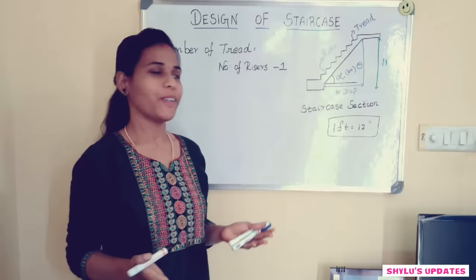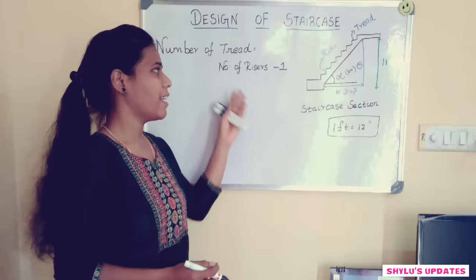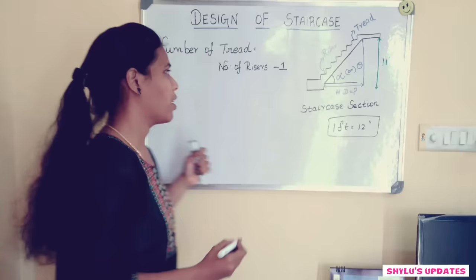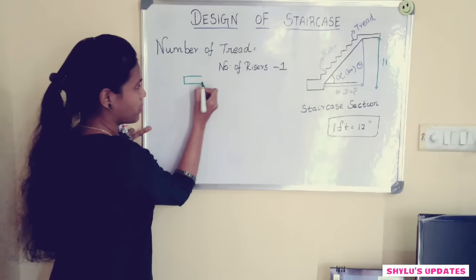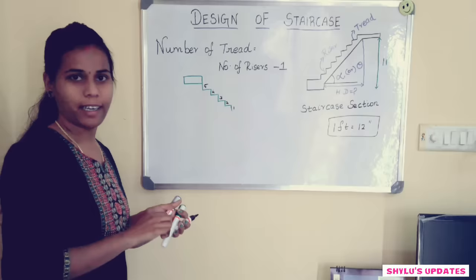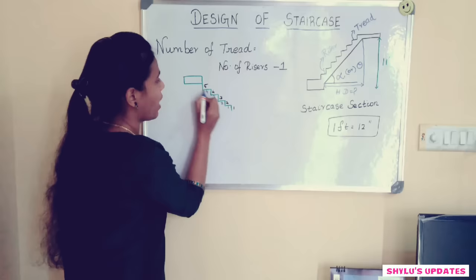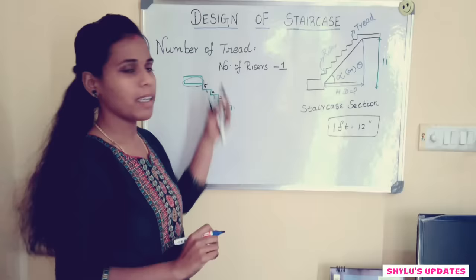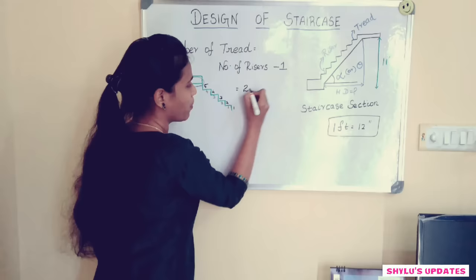In the next step, we are going to calculate the number of treads. The formula is: number of treads equals number of risers minus 1. You may wonder why we subtract 1 from the number of risers. The reason is this: consider a staircase section — if you count the risers there are 5, but when you count the treads there are only 4, because the fifth tread is connected to the slab and should not be counted. That is why we subtract 1. So, 22 minus 1 equals 21 treads.